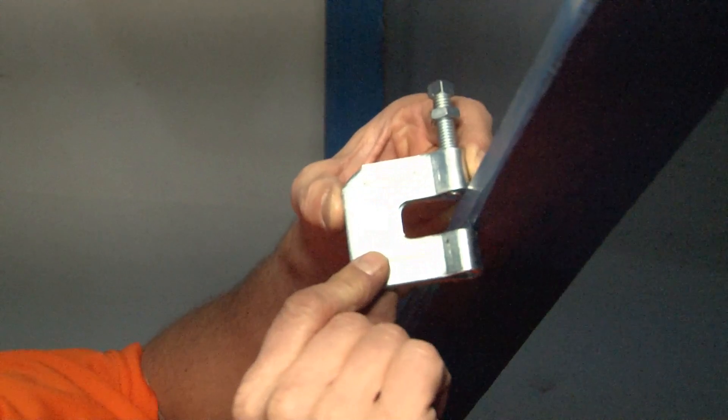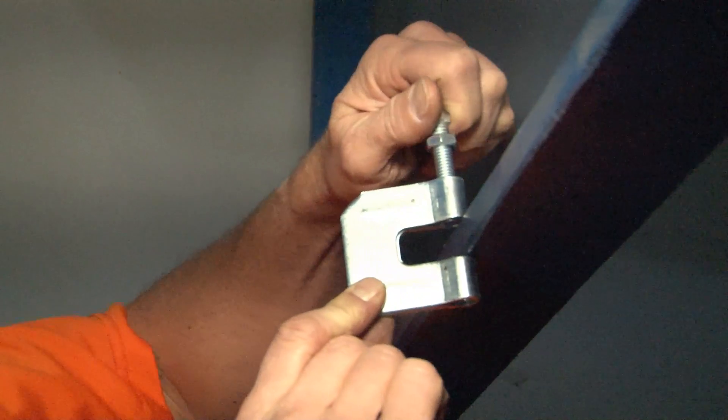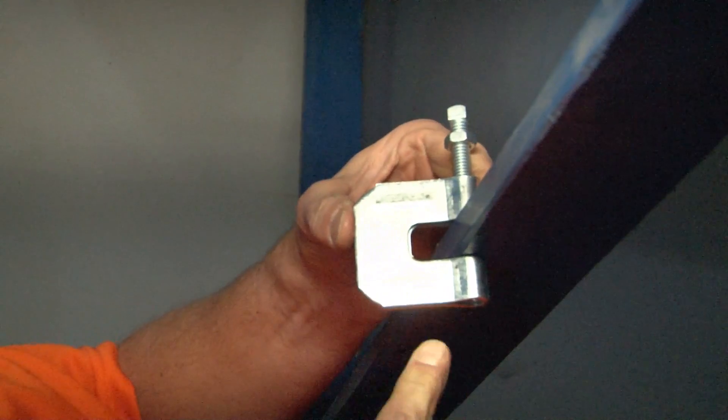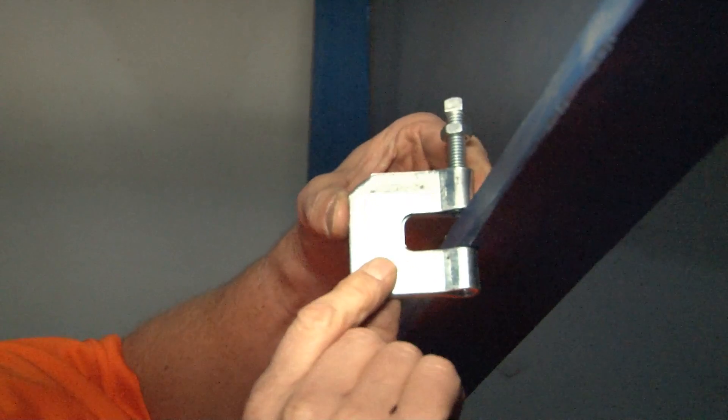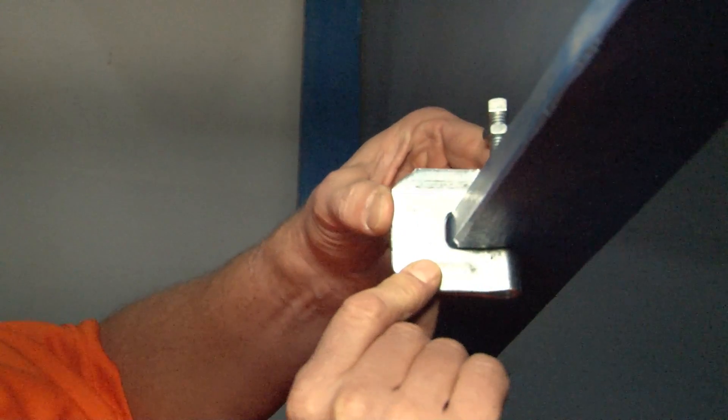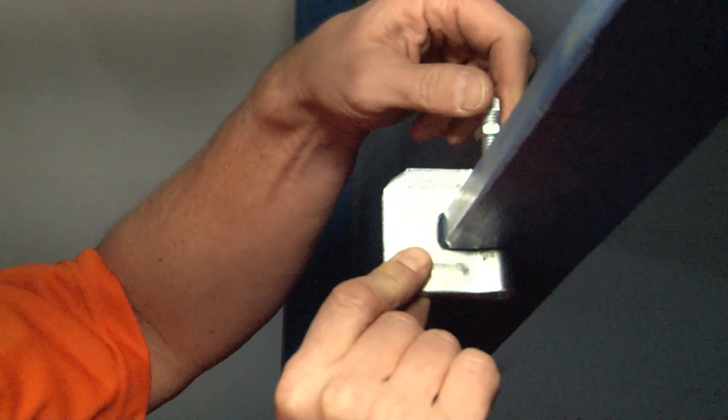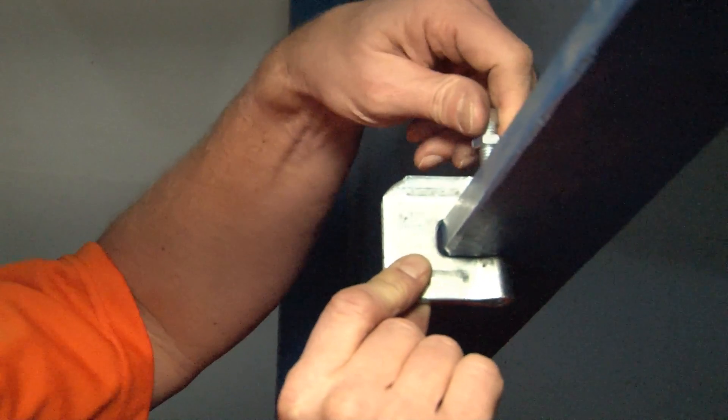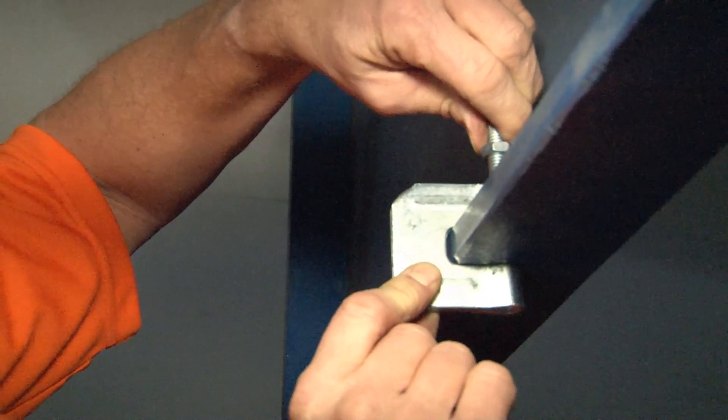You simply align the jaw of the clamp right on the beam where you want to drop the threaded rod. You slide it into place and then using the set screw on the top, tighten it down so that it bites against the top of the beam.